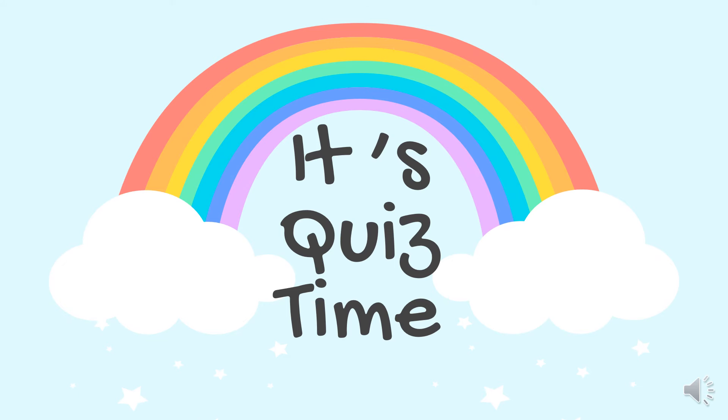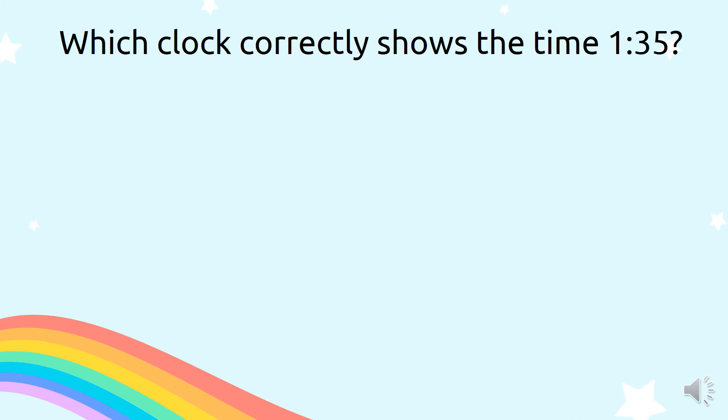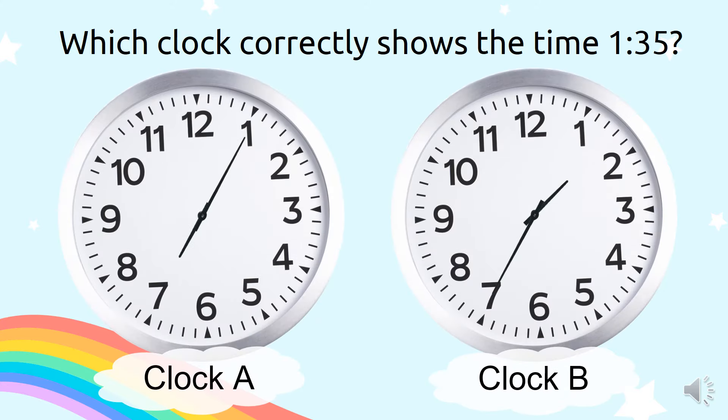It's time for some quiz. Which clock correctly shows the time 1:35? Is it clock A or clock B?